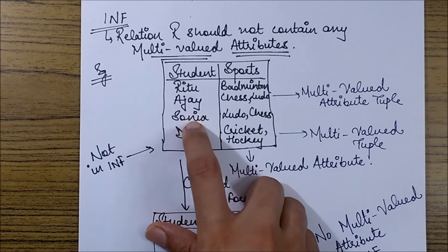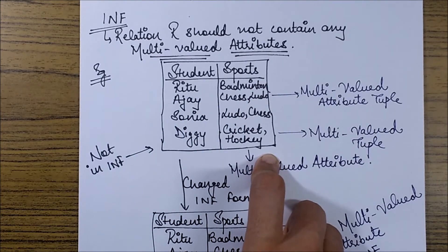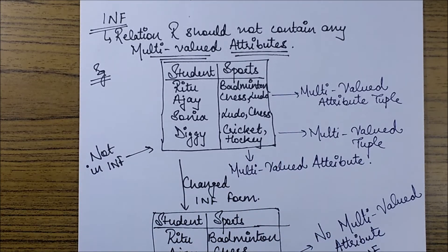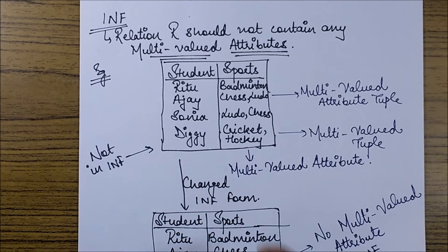So as you can see, there are comma-separated values present in this table, but we never store a relational schema in this form. So simply, as this attribute is a multi-valued one, this form is not in 1NF.